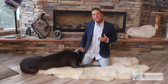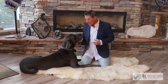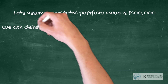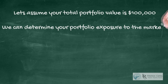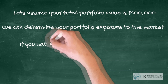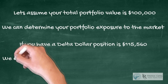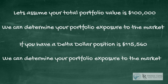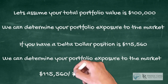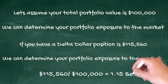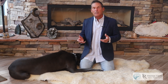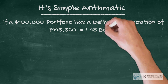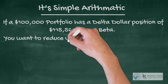Now, why is that important? What I can do with Delta dollars is quite simple. Let's assume your total portfolio value is $100,000 and you have a Delta dollar position of $115,560. You take your Delta dollar position and divide it by your portfolio to come up with how much market exposure you have — especially if the market crashes 20%. If you have a $100,000 portfolio with a Delta dollar position of $115,000, your beta is 1.15.